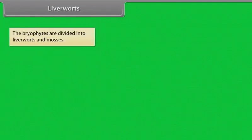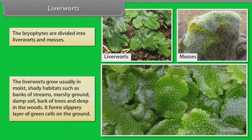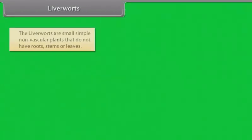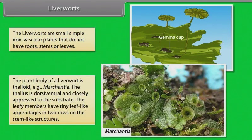The bryophytes are divided into liverworts and mosses. The liverworts grow usually in moist, shady habitats such as banks of streams, marshy ground, damp soil, bark of trees and deep in the woods. It forms slippery layer of green cells on the ground. The liverworts are small simple non-vascular plants that do not have roots, stems or leaves. The plant body of a liverwort is thalloid, example: marchantia. The thallus is dorsiventral and closely appressed to the substrate. The leafy members have tiny leaf-like appendages in two rows on the stem-like structures.